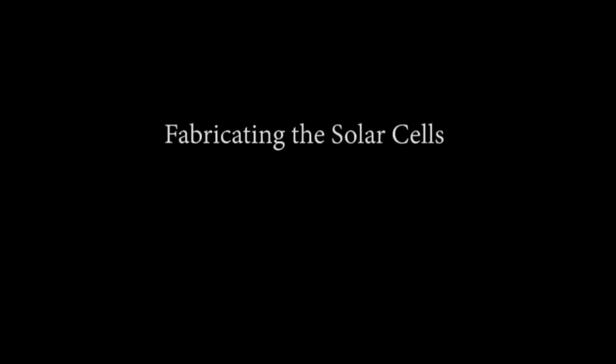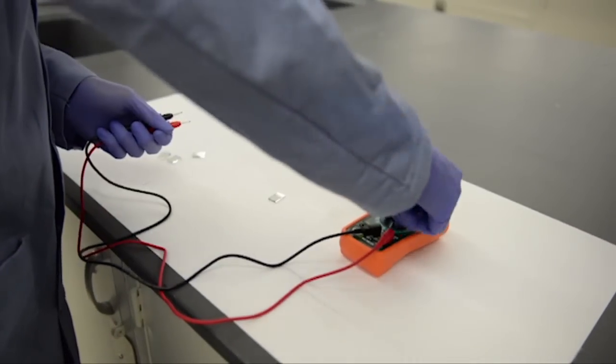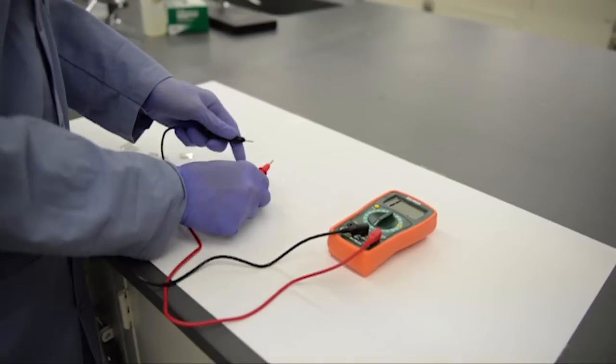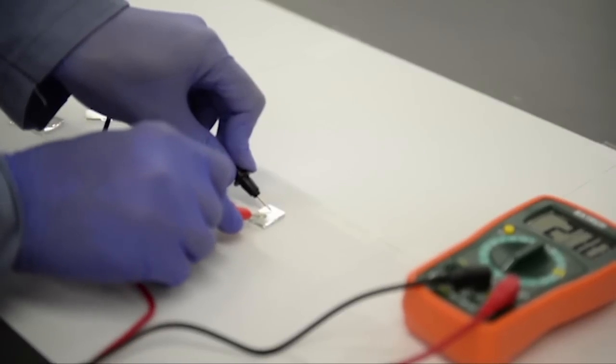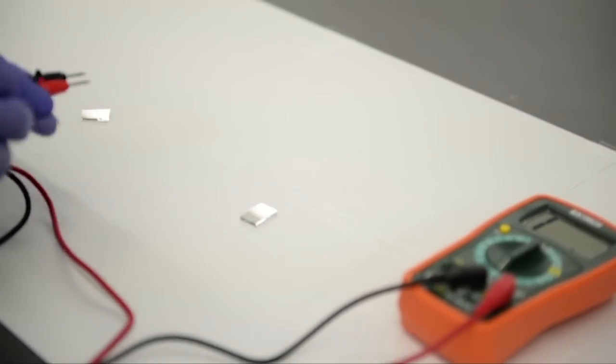In the first step, we will determine the conductive side of FTO glass. To determine the conductive side, we set the multimeter to resistance mode, plug the two leads into the multimeter, and measure the sheet resistance on each side using the probes. The uncoated side will not give any value.